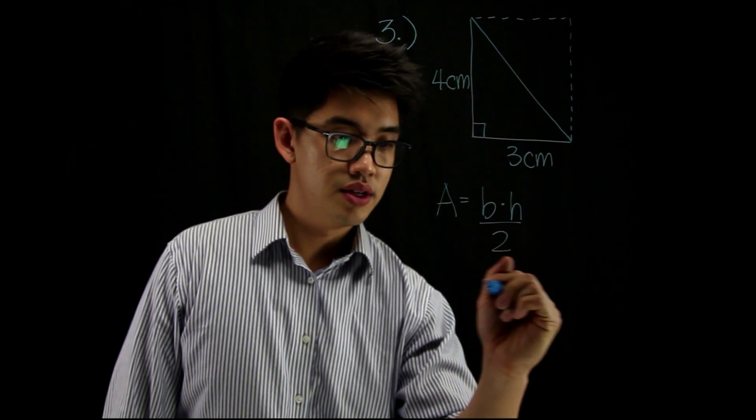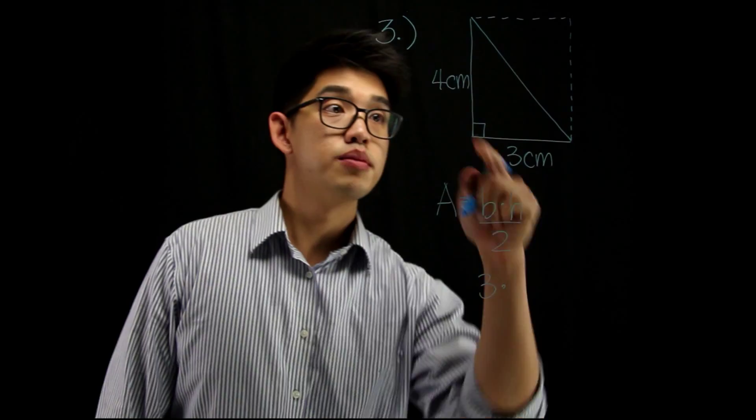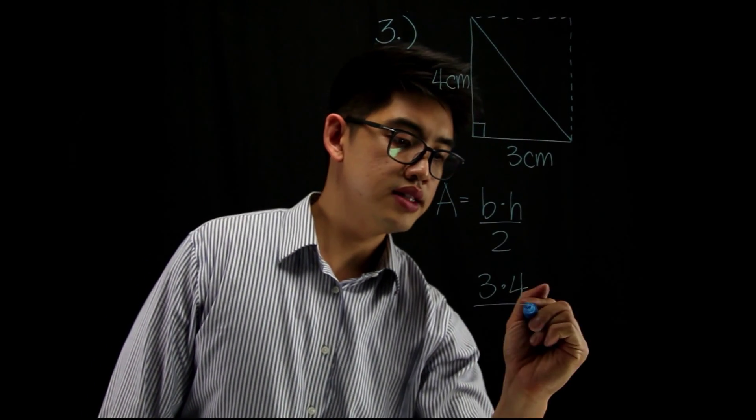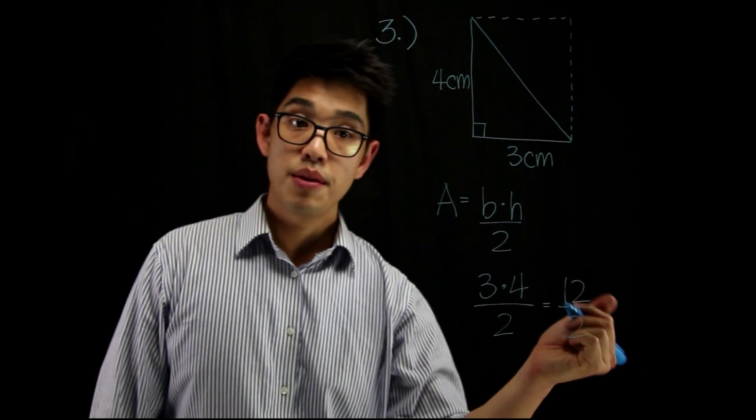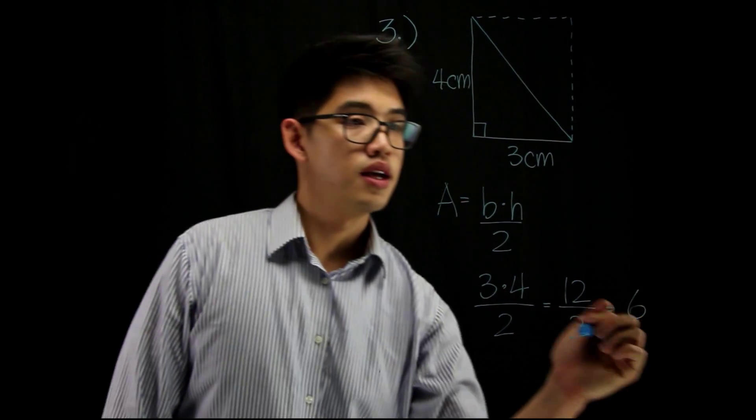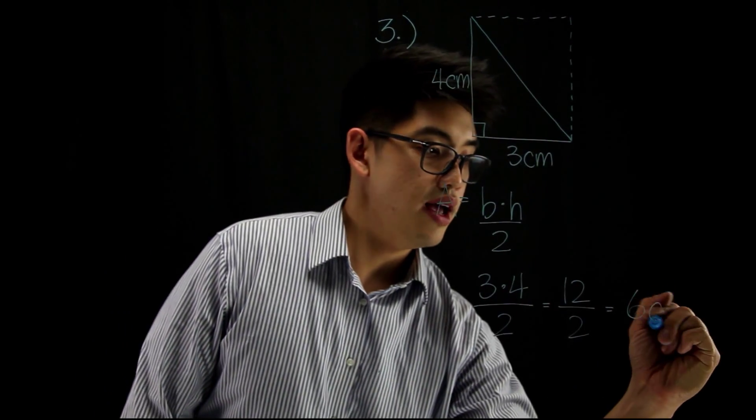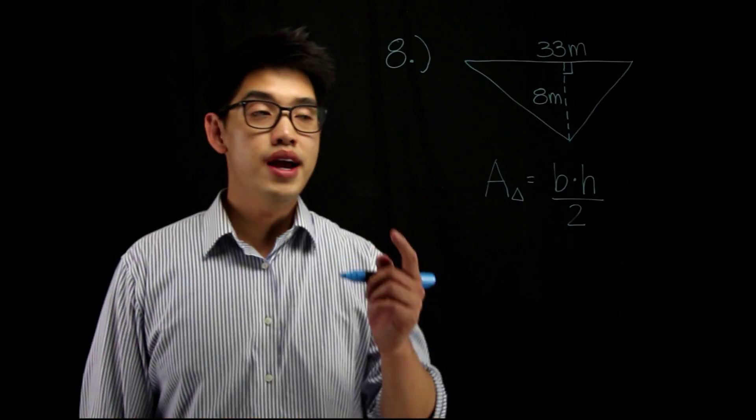The base here is going to be 3. So, we're going to write 3 times the height, which is 4, and then divide that by 2. 3 times 4, that's 12. And then divide it by 2. That's going to give me 6. And since it's in centimeters, we know that the area is 6 centimeters squared.